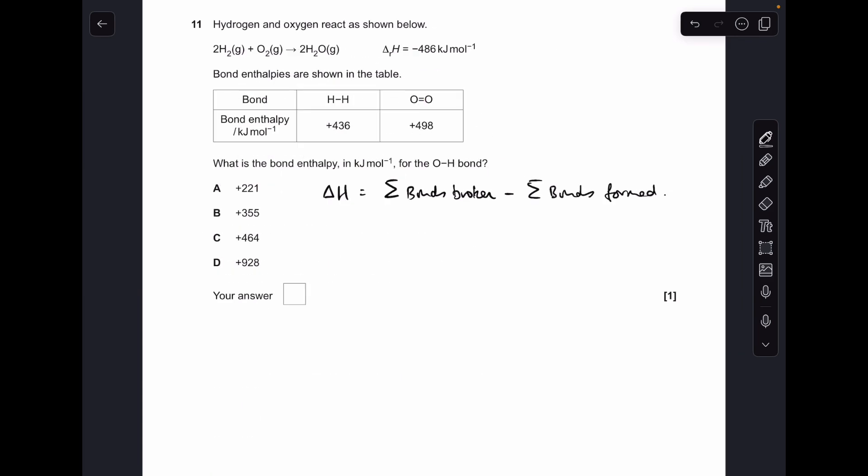Number eleven: the formula we're going to use here is delta H for the reaction is equal to the sum of the bonds broken minus the sum of the bonds formed. So we'll just put the numbers in - there's everything that we know, and the unknown is the OH bond enthalpy, so I'm saying 4x for that. The 4 is because we're making two moles of H2O; each H2O molecule has two moles of the OH bond. So all we need to do now is solve for x. That comes out at +464, so it was C.